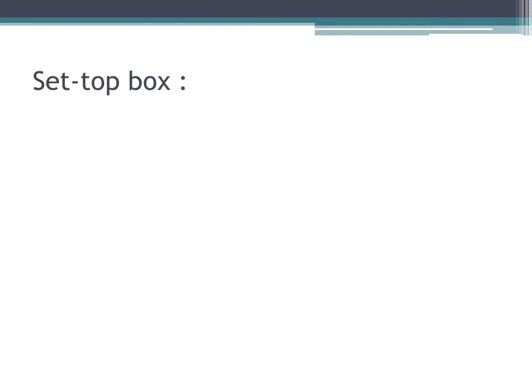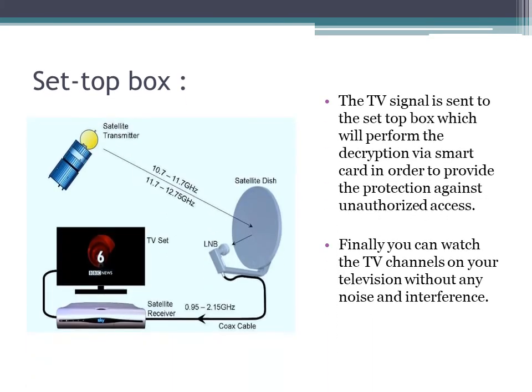Another important component of the DTH system is the set-top box. The converted signal from the LNB is sent to the satellite receiver, called the set-top box, through the coaxial cable. The set-top box contains a smart card which performs decryption in order to provide protection against unauthorized access. It is also capable of identifying the subscription of the user — for how many days they can watch channels, for how many channels they have paid, and how many freely available channels they have. All this data is stored in the smart card.